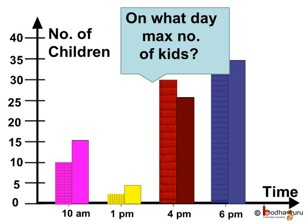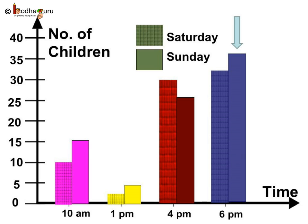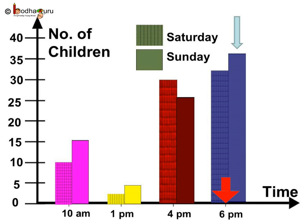Using this double bar chart, can you tell on what day and time the maximum number of kids were there in the park? If we observe carefully, the bar with maximum length represents the maximum number of children. It is the plain blue bar, and blue represents the data for Sunday. Looking at the time on the horizontal line, it shows 6 pm. So we can say the maximum number of children were in the park on Sunday at 6 pm, and that number was 36.